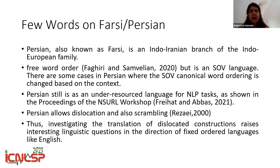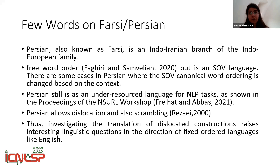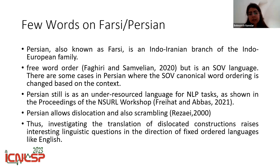Persian is still an under-resourced language for NLP tasks, as shown in the previous workshop. Persian also allows dislocation and scrambling, which from the point of view of NLP or neural machine translation tasks would be really interesting to investigate. Investigating the translation of dislocated constructions is particularly captivating when going from a free word order language to a fixed order language such as English.